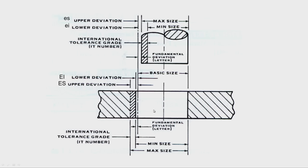Similarly for the hole, the algebraic difference between the basic size and the minimum size of the hole is the lower deviation, designated by capital EI. And the difference between the basic size and the maximum size of the hole is the upper deviation, designated by capital ES.